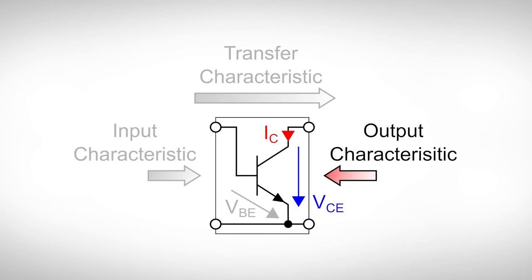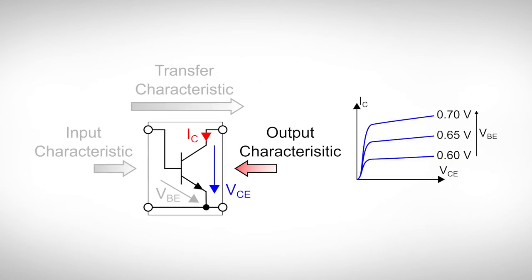The output characteristic can be a bit daunting at first. But let's break things down a little bit and go one step at a time. With the output characteristic we want to figure out how the collector current IC is related to the collector emitter voltage VCE.